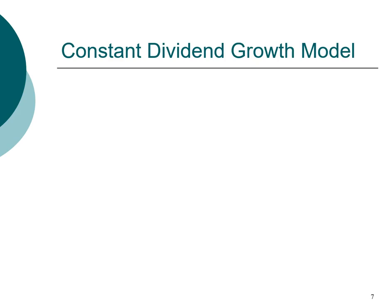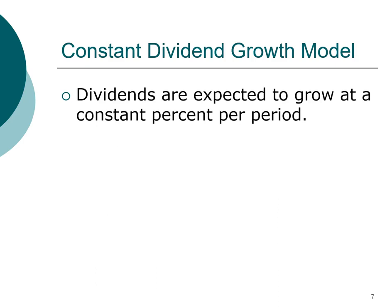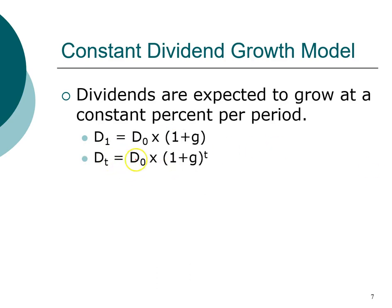In the constant dividend growth model, dividends are expected to grow at a constant rate forever. If you know the dividend at any point in time, you can estimate future dividends. Dividend in year one equals dividend in year zero times (1 + growth rate). If the growth rate is 5% and dividend in year zero is one dollar, then dividend in year one will be $1.05. We can extend this using the exponential growth formula, so dividend in year five equals dividend in year zero times (1 + g) raised to the power of five.